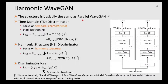The basic structure of the Harmonic Wave GAN proposed in this study is almost the same as that of PWaveGAN. The difference is the use of two discriminators: the TD discriminators and HS discriminators.